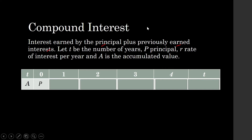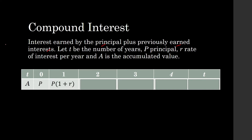Let t be the number of years, p is the principal — it can be a loan or an investment — r is the rate of interest per year, and A is the accumulated value. Let us derive the equation that will give us the accumulated value of an investment. At the end of the first year,